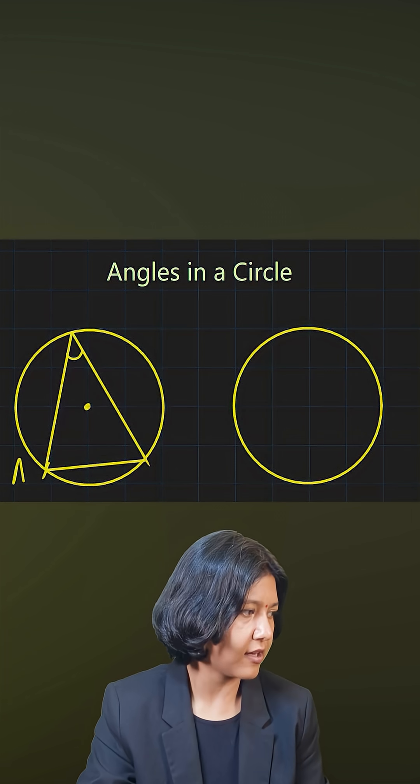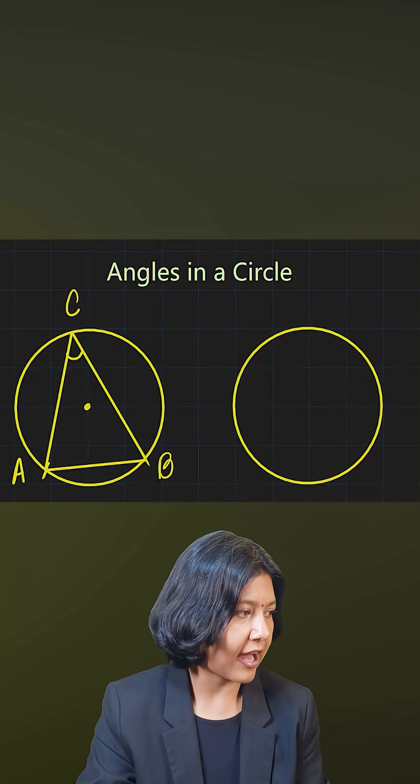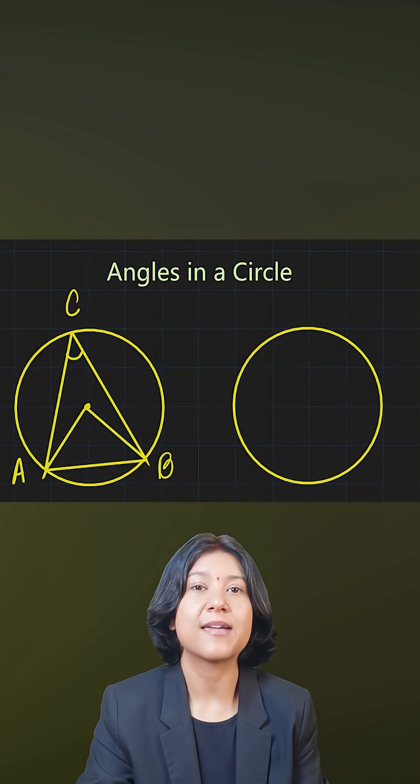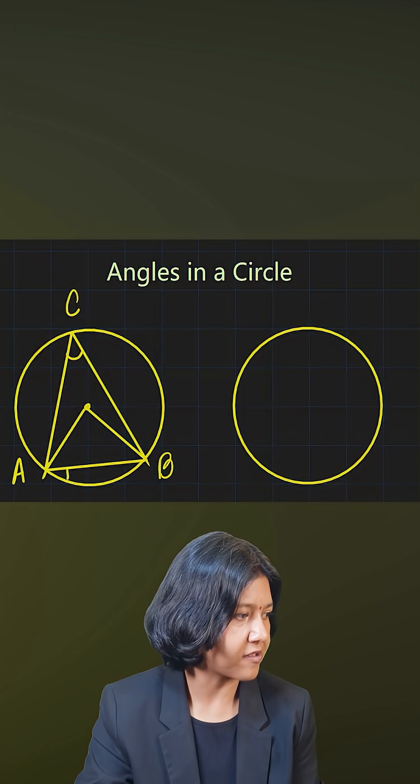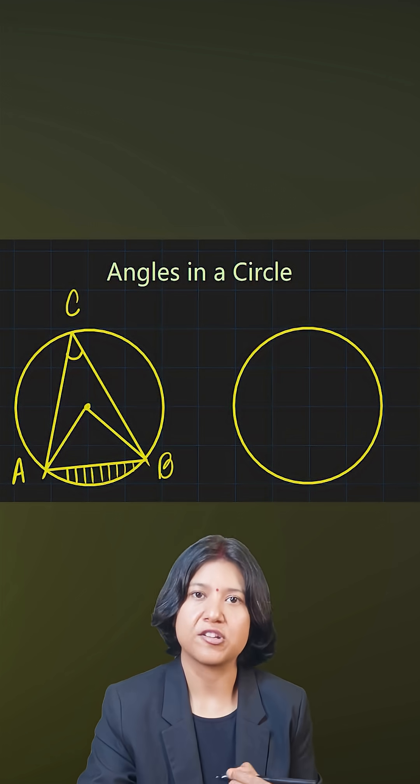If the chord is AB, the angle is made at point C. This angle and the angle made at the center both have to be in the same segment. A segment is when you have a chord and this chord has divided your circle into two parts: the minor segment and the major segment.